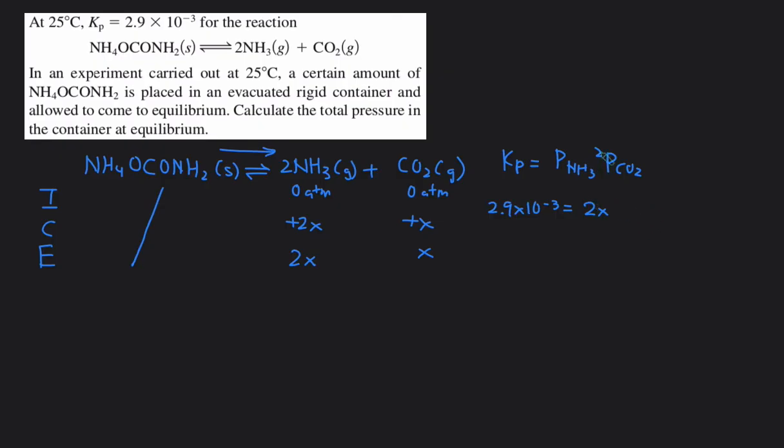NH3 is 2x, but because there's a 2 here, we would have to square it, and then CO2 is this x. So then this simplifies to 4x squared times x, which is 4x cubed.